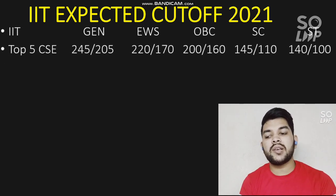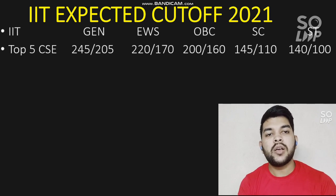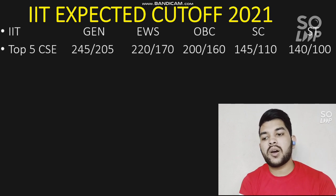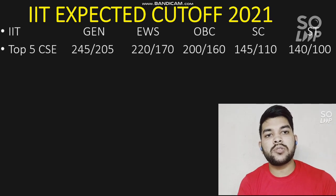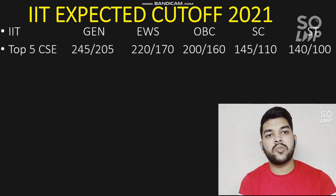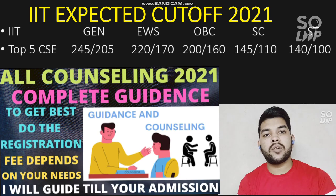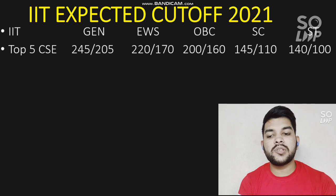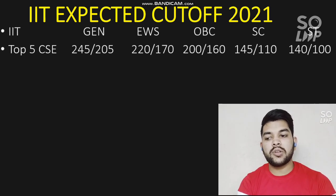If you want a top 5 IIT with the CSC branch, for General male candidates you should have at least 245+ marks, and for female 205+ marks. For EWS: male 220, female 170+ marks. For OBC: 200 and 160. For SC: 145 and 110. For ST: 140 and 100 marks. These are the minimum marks needed. If your marks are slightly less, you may still get in with better counseling, as mistakes in counseling can cost you your deserving seat.